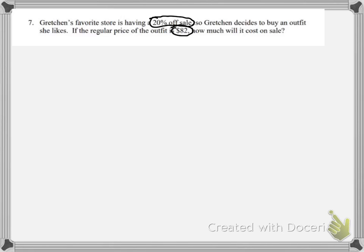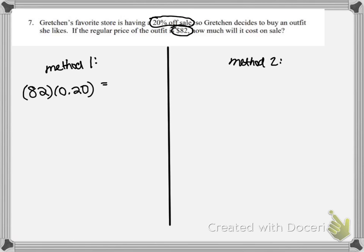There's actually two ways to think about this. I would suggest right now, if you're watching this video, pause it, see if you can figure out how much it will cost on sale, then unpause the video and see if you are correct. So one way to do it is we could start by multiplying $82 by 20%.